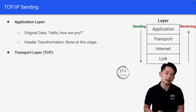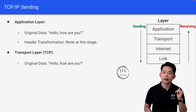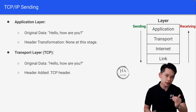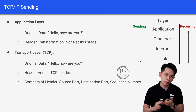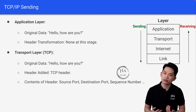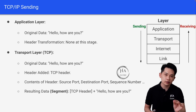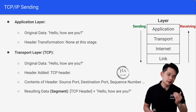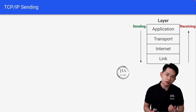Next, let's go to the transport layer. The data we get from the application layer will be the same: "Hello, how are you?" At this stage, a TCP header will be added to the existing data. The contents of the header will be source port, destination port, sequence number, and so on. You do not have to memorize all the content within the header — just a rough idea will do. By adding the TCP header, the resulting data will be TCP header plus the original message. Take note that at the transport layer, the data is known as a segment.